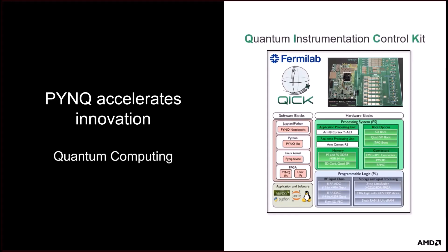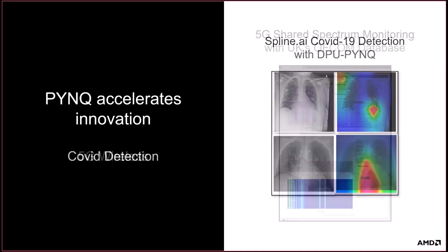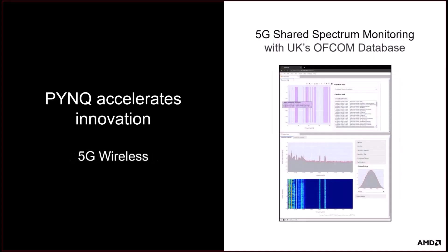Let's preview some examples of where PINK accelerates innovation. A Fermilab team has created a framework called QUIC, built on RFSoC PINK, which is a control kit that accelerates innovation in quantum computing and quantum instrumentation. A company called Spline AI used PINK with a DPU overlay to get their new COVID-19 detector to market more quickly, despite being new to programmable logic. Our final example shows the first open source spectrum analyzer integrated with a regulator's database of allocated spectrum, using RFSoC PINK for better spectrum monitoring and regulation.